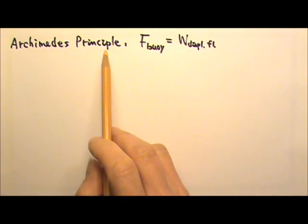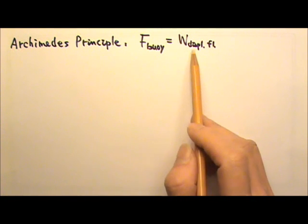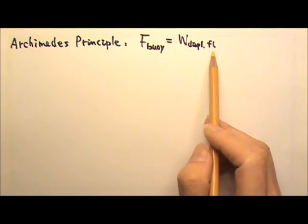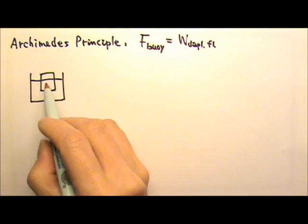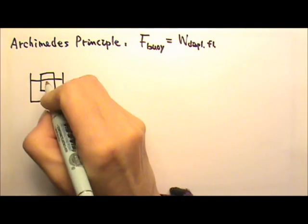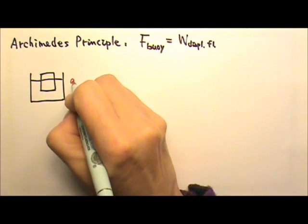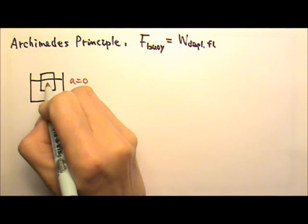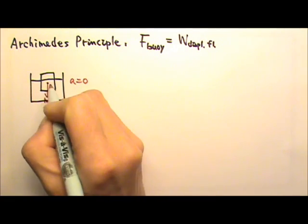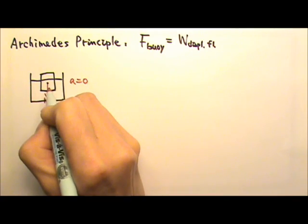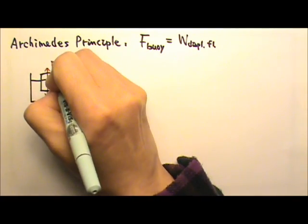The Archimedes principle says that the buoyant force equals the weight of the displaced fluid. For example, let's look at a floating object. If the object is floating right there, that means the acceleration is zero. So if we draw the force diagram, there will be mg, and since it's touching the fluid, this fluid gives it a buoyant force that goes upward.